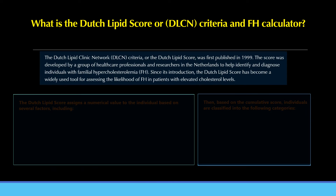What is the Dutch Lipid Score or DLCN Criteria? The Dutch Lipid Clinic Network Criteria, or Dutch Lipid Score, was first published in 1999. It was developed by healthcare professionals and researchers in the Netherlands to help identify and diagnose individuals with familial hypercholesterolemia, and has since become a widely used tool for assessing the likelihood of FH in patients with elevated cholesterol levels.